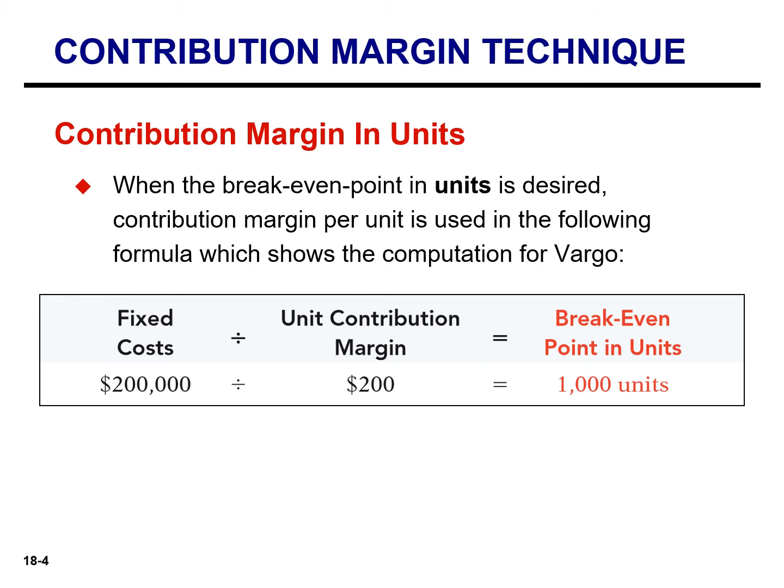Rather than walk through all the steps of the equation approach, we can simply use this formula. Remember, unit contribution margin is the net amount by which each sale exceeds the variable cost per unit — in this case, it's $200. Every sale generates this much money to pay off fixed costs. If we divide the fixed cost by the unit contribution margin, we know how many units we need to sell to break even.